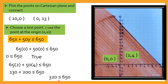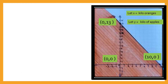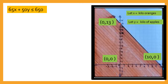So pwede ito, pasok siya. Kasi ang sabi dito, less than or equal — ito lang ang pwedeng maximum na pwede mong gastusin. Now, ang ibig sabihin ng (0, 13) — ang mga points na makikita dito ay kasama sa solution. Ibig sabihin, ang (0, 13) ay part, ang (10, 0) is part of the solution.